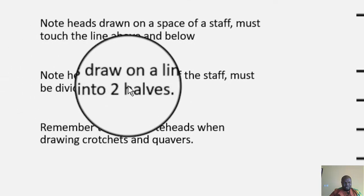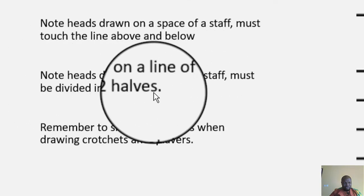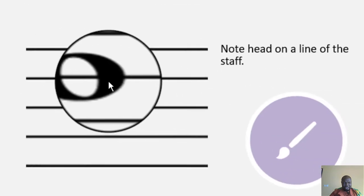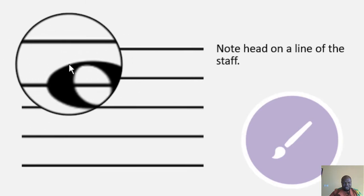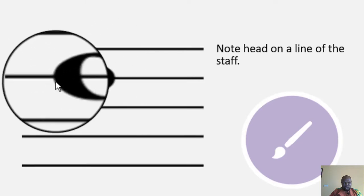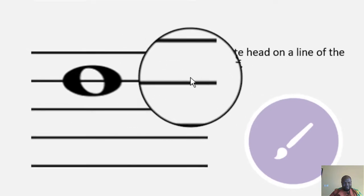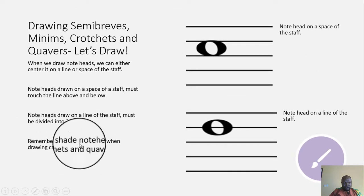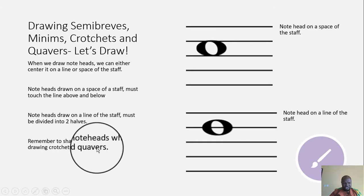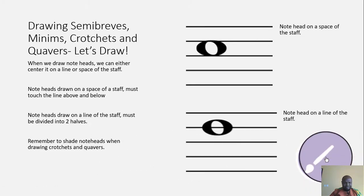Note heads drawn on a line of a staff must be divided into two halves. As you can see, this note head sitting on the line is divided into two equal parts by that line. Remember to shade note heads when drawing crotchets and quavers, and that's basically how we draw note heads.